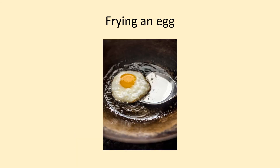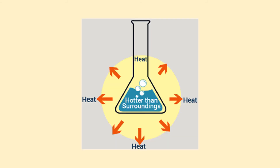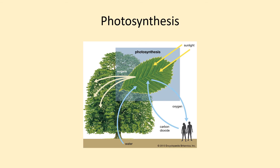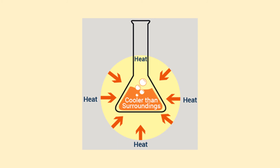Frying an egg — exothermic or endothermic? That is endothermic because you have to keep supplying that heat energy. This diagram — is that showing you an exothermic or an endothermic reaction? We're giving out heat, so that makes it exothermic. Photosynthesis — mentioned this at the start of the video — exo or endothermic? That's endothermic because energy is being supplied by the sun, by sunlight. Is this diagram showing you an exo or endothermic reaction? We've got heat energy going in — that is endothermic.